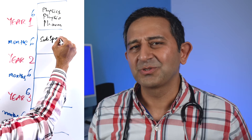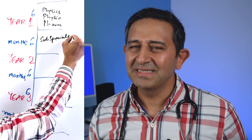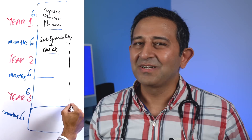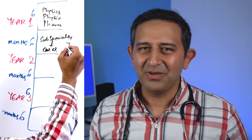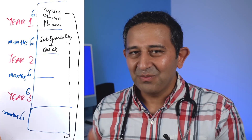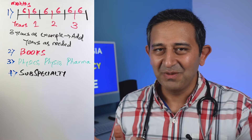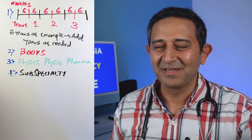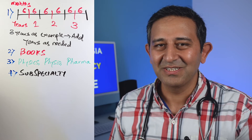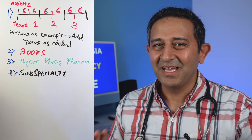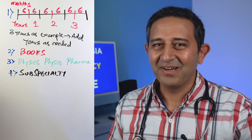Moving on to tip number four: by six months to a year into your anesthesia residency, you would have started rotating through subspecialties, seeing cases related to pediatric, cardiac, obstetric, and many others. When you're going through these subspecialties, pick your book — that could be Morgan or Miller — and read all the basics related to that subspecialty. For example, if you're doing a pediatric anesthesia rotation, make sure you read about physiology, pharmacology, anatomical differences, differences in airway, and how to intubate during that rotation.